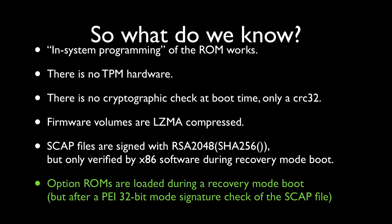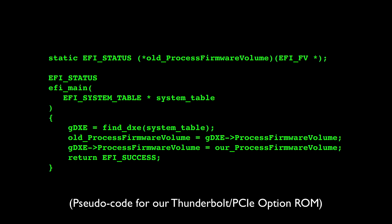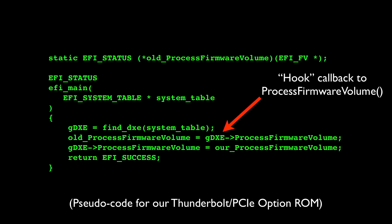However, there's a minor roadblock: there is a PEI 32-bit mode signature check of the SCAP file before the option ROM gets executed. So, is there a way we could bypass that check? Going back to the pseudocode for the flasher verification, remember that process firmware volume is being called via a function pointer that's in RAM, not in ROM. So the option ROM could replace that function pointer in a process called hooking. We can modify the option ROM to hook the process firmware volume function pointer and replace it with its own, also storing the old one so it can be reused later.